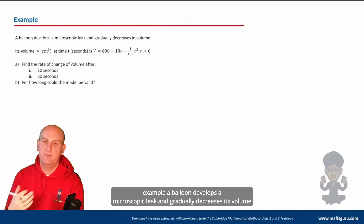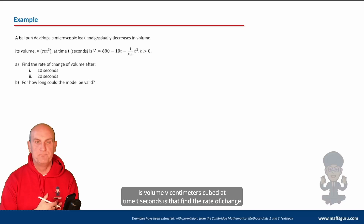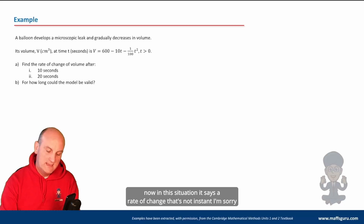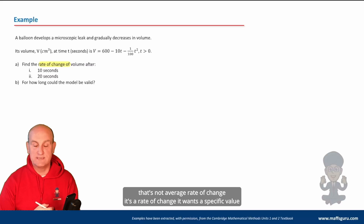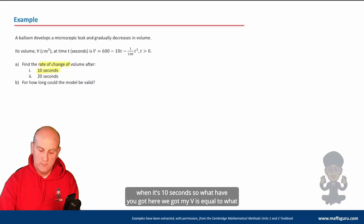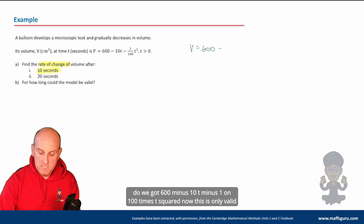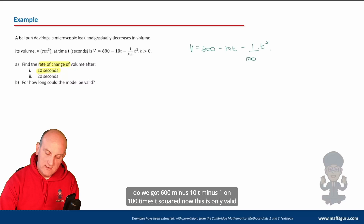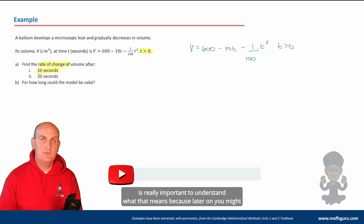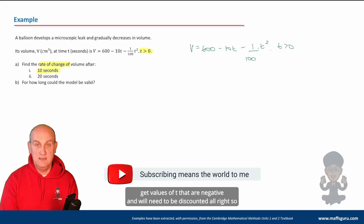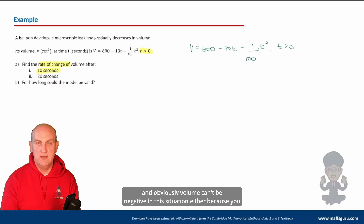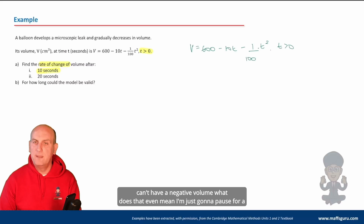Here's another example: a balloon develops a microscopic leak and gradually decreases in volume. Its volume V in centimeters cubed at time t seconds — find the rate of change. In this situation it says 'a rate of change' at a specific value when t is ten seconds, so that's instantaneous. We have V equals 600 minus 10t minus one-hundredth times t squared, valid for t greater than zero. Volume can't be negative either — a word of warning whenever they give you a domain restriction.